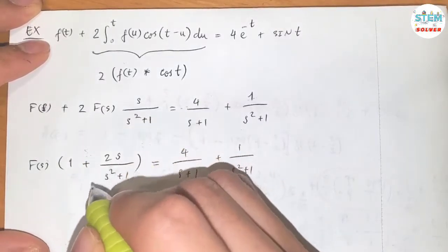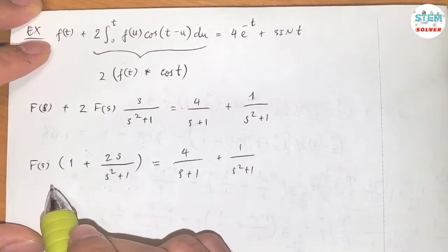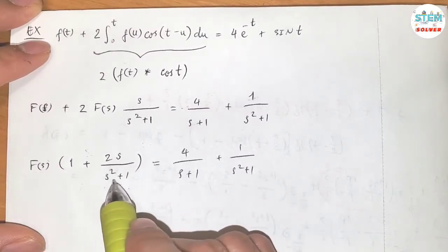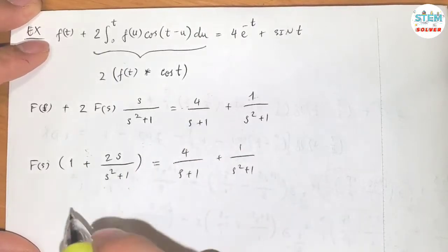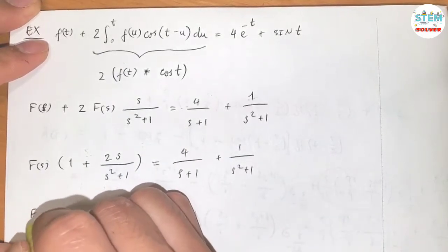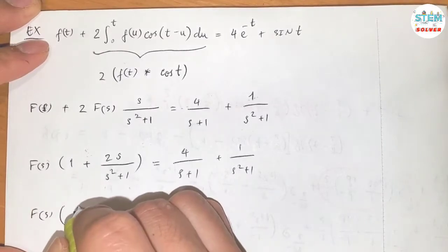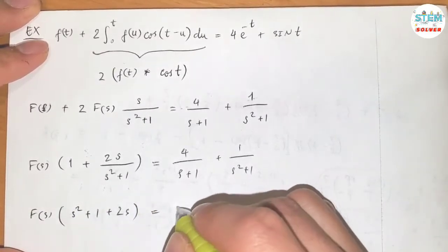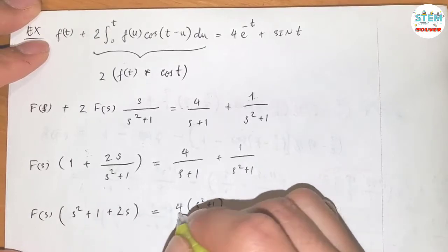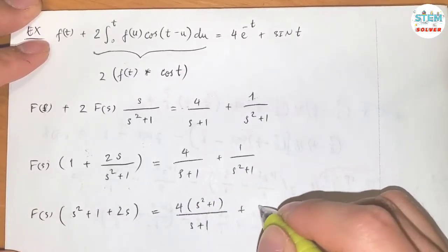The next step is to multiply both sides by s² plus 1 to get rid of the denominator. So I have capital F(s) times (s² plus 1 plus 2s) equals 4 times (s² plus 1) over (s plus 1) plus 1.